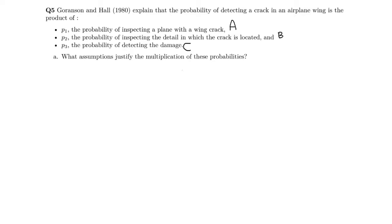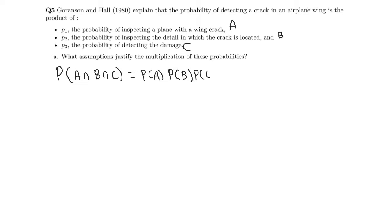The probability of detecting a crack — that is, the probability of A and B and C — equals the product of the individual probabilities. This rule implies that events A, B, and C must be independent.